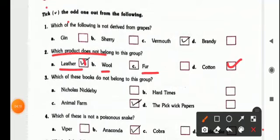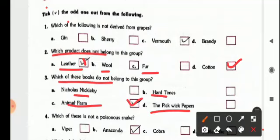Now, the third one is, which of these books do not belong to this group, so it is Animal Farm. Because all these Hard Time and Pick Papers is the work of Niccolas Nicolai.